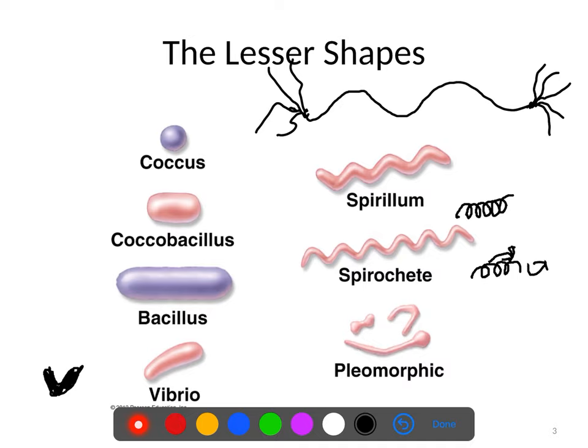Then we have coccobacillus, which I find to be very annoying because depending upon where in their life cycle they are, they can either look like a kind of elongated ovoid cocci or a very short rod. That means they can sort of mimic both cocci and bacilli, hence the name coccobacillus. If you see a population of bacteria that ranges between elongated circles and really short rods, you're probably looking at a coccobacillus.